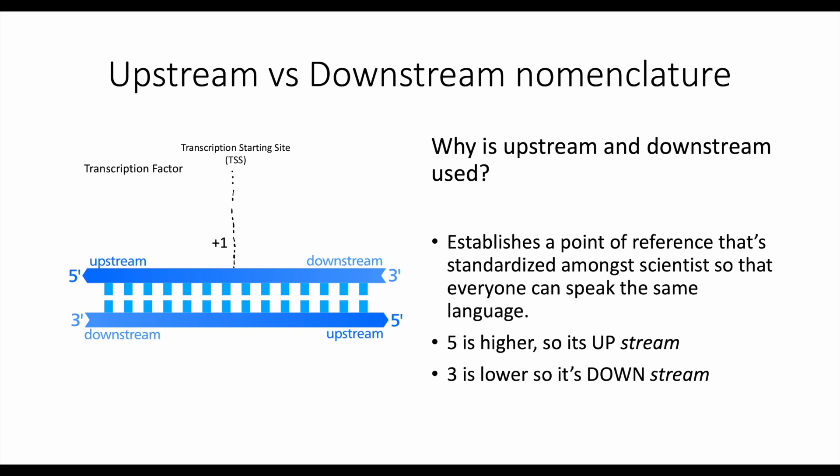So what does upstream and downstream mean? It is used to establish a point of reference that standardizes among scientists so that one can speak to another in the same language. An easy way to remember it is that five prime is bigger or higher, so think of that as being upstream. Three prime is lower, so think of that as being downstream. You must understand whether it's five prime or three prime to understand the orientation.